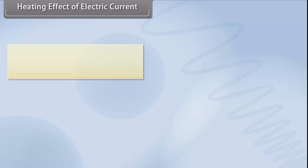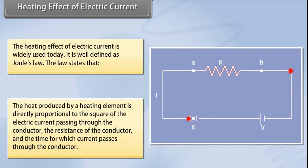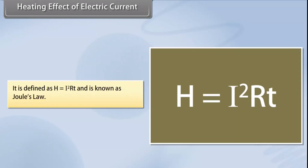Heating effect of electric current: this effect is caused when electric current is passed through a conductor, generating heat due to the resistance it offers to the current flow. The work done in overcoming this resistance produces heat. The heat produced by a heating element is directly proportional to the square of the electric current passing through the conductor, the resistance of the conductor, and the time for which current passes through the conductor.